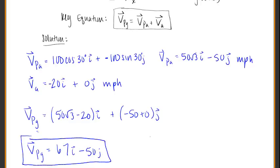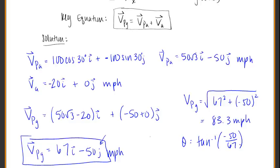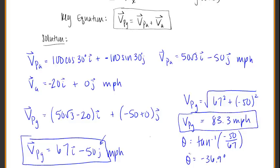That's the vector component of the airplane broken down into its x and y components in miles per hour. If we want to find the magnitude and direction, the magnitude is the square root of 67 squared plus negative 50 squared, which equals 83.3 miles per hour. For the direction, theta is the inverse tangent of y over x — negative 50 over 67 — giving us theta equals negative 36.9 degrees.